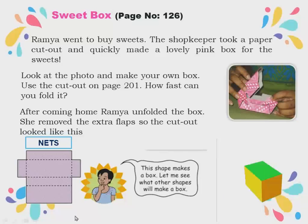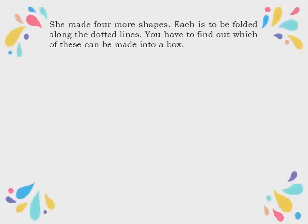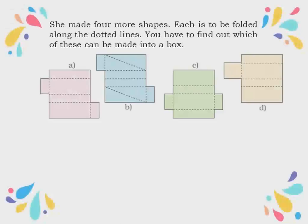Let me see what other shapes will make a box. She made four more shapes, and each is to be folded along the dotted lines. You have to find out which of these can be made into a box. Dotted lines are the folding lines — wherever dotted lines are, those are the folding places, not cutting places. It is a folding place where you fold it.